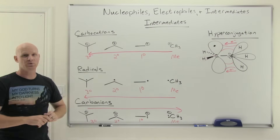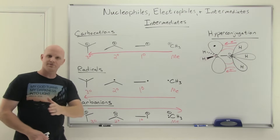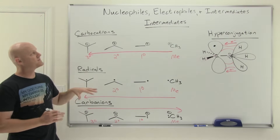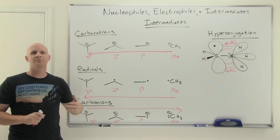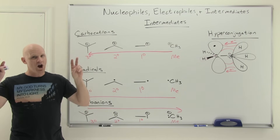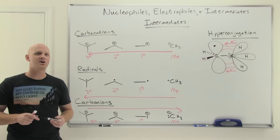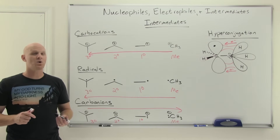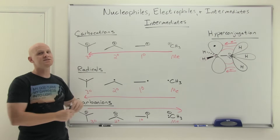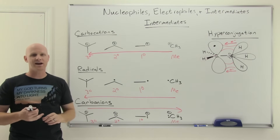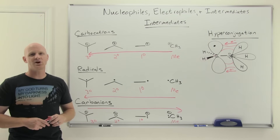These three intermediates — carbocations, radicals, and carbanions — are the common ones we'll encounter throughout both OChem 1 and OChem 2. In the next lesson, we'll dig into mechanisms, identify the four most common mechanistic steps, and start going through the arrow pushing associated with them. If you found this lesson helpful, consider giving it a like and a share. Leave questions in the comments below, and check out the study guide, practice quizzes, and practice exams at chadsprep.com.